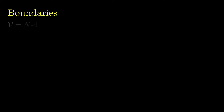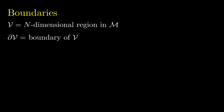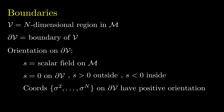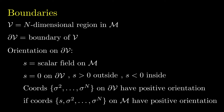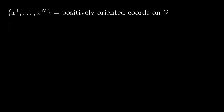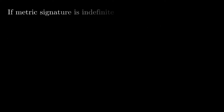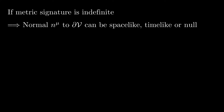Now let's consider boundaries. Let V be an n-dimensional region or subset of the manifold M with boundary partial-V. The orientation of coordinates on the boundary is defined as follows. Consider a scalar field s on V such that s equals 0 on the boundary, with s increasing from the interior to the exterior of V. We consider a coordinate system sigma-2 through sigma-n to be positively oriented on partial-V if the coordinates s, sigma-2 through sigma-n form a positively oriented coordinate system on M. When the metric signature is indefinite, the normal to the boundary can be time-like, space-like, or null, and may change character from one boundary element to another.